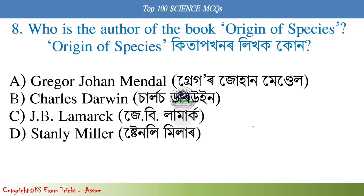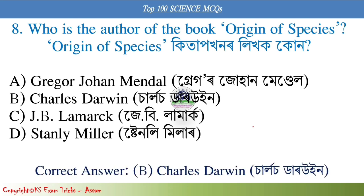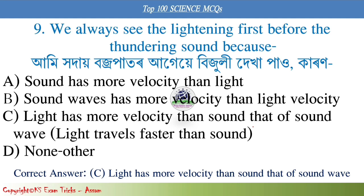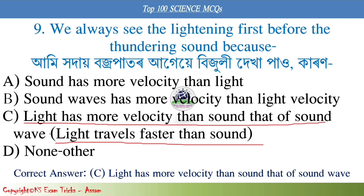Who is the author of the book Origin of Species? Next question: Who always sees the lightning first before the thunder sound? The correct answer is option C — light has more velocity than sound.